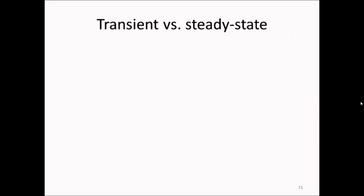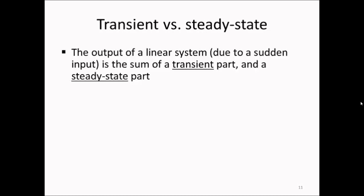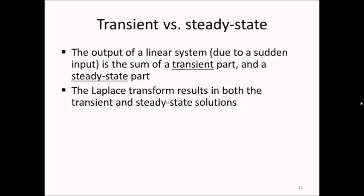I want to conclude by discussing transient versus steady-state conditions. The output of a linear system due to a sudden input — turning the input on at t = 0 — is the sum of a transient part and a steady-state part, where the steady-state part is what remains after the transient has died out. The Laplace transform gives both the transient and steady-state solutions, but the Fourier transform — using the product of X(f) times H(f) — only gives the steady-state spectrum.